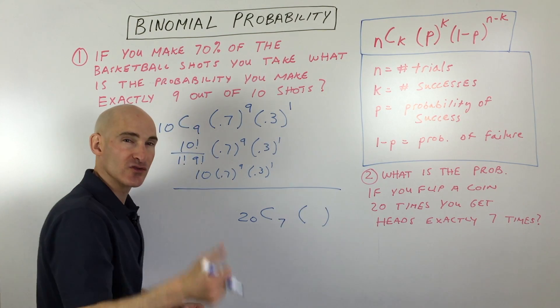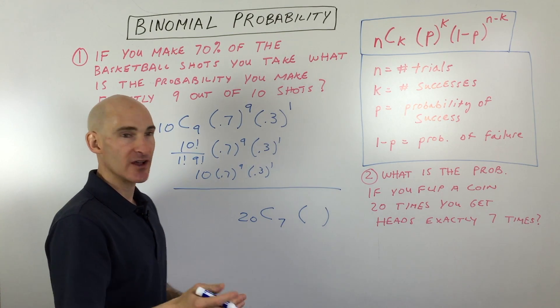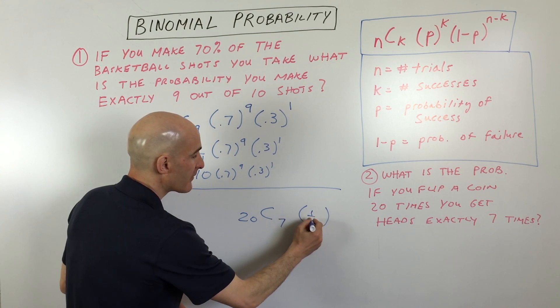We know that when you flip a coin, there's only two possibilities. It's either going to land on heads or tails. And so that's going to be a one-half probability.